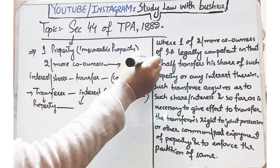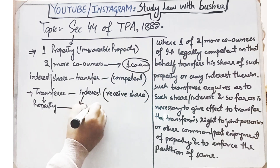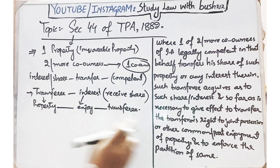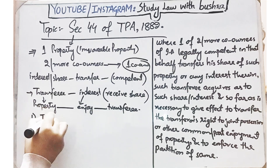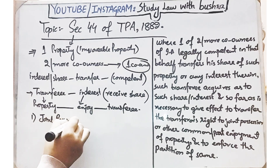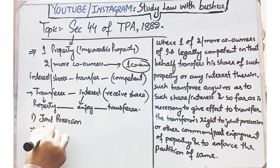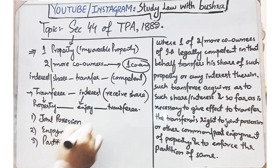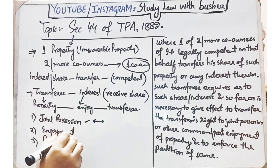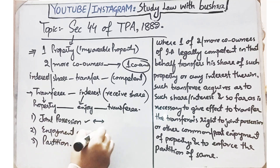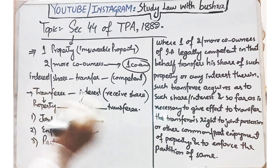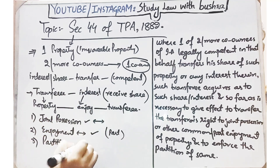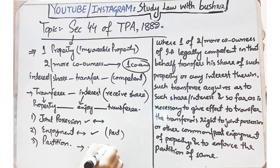As soon as the transferee receives that share, the transferee acquires interest in that immovable property, and all the rights that the co-owner was previously enjoying will now shift to the transferee. Those rights, as mentioned in this section, are: firstly, right to joint possession; secondly, right of enjoyment; and thirdly, the right to enforce the partition of the same.